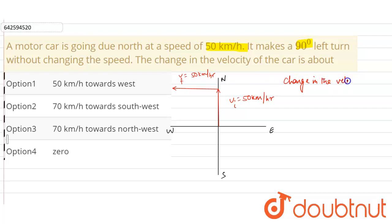...will be equals to the final velocity minus the initial velocity, correct. Now from the vector, as we know that the minus sign over here represents the vector to get in the opposite direction with the same magnitude.